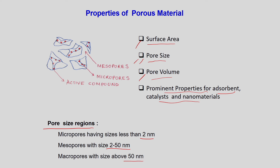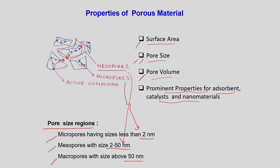You have a distribution of sizes and based on these sizes you classify them as micropores, mesopores, and macropores. In the simplest diagram, you see different pores — the red portions are some active compounds inside the pores. Mesopores may be in the region of 2 to 50 nanometers and micropores less than 2 nanometers. Any porous substance will have a combination of both micropores and mesopores.